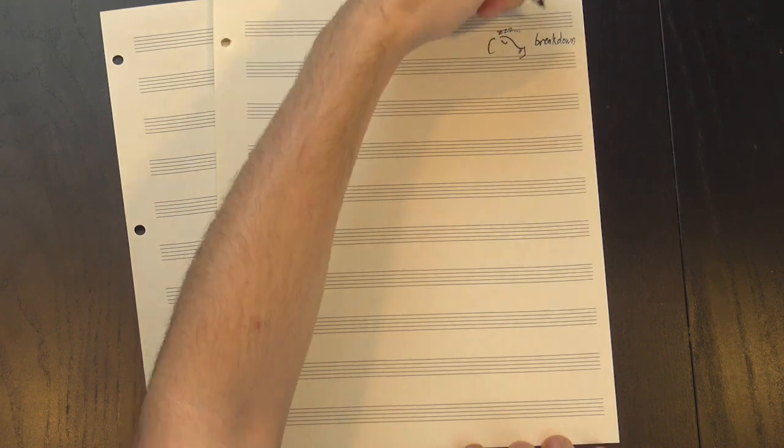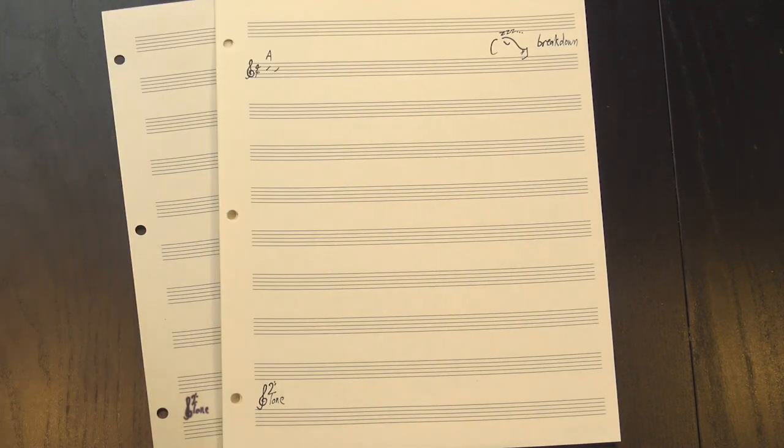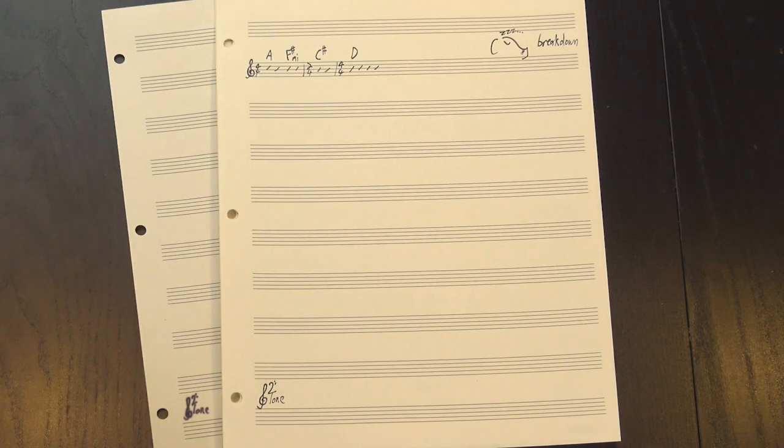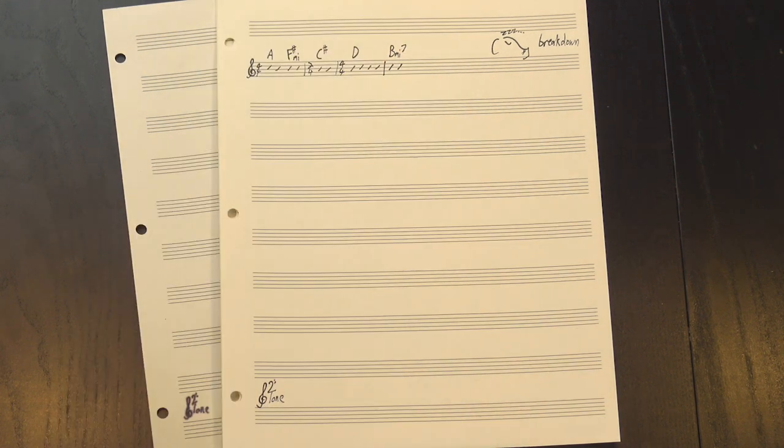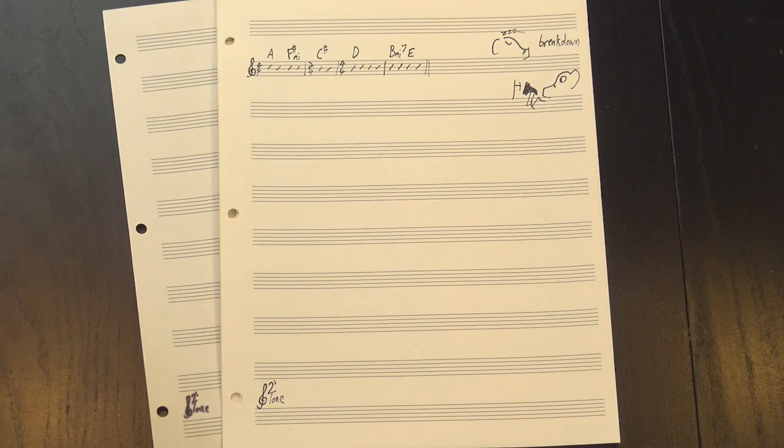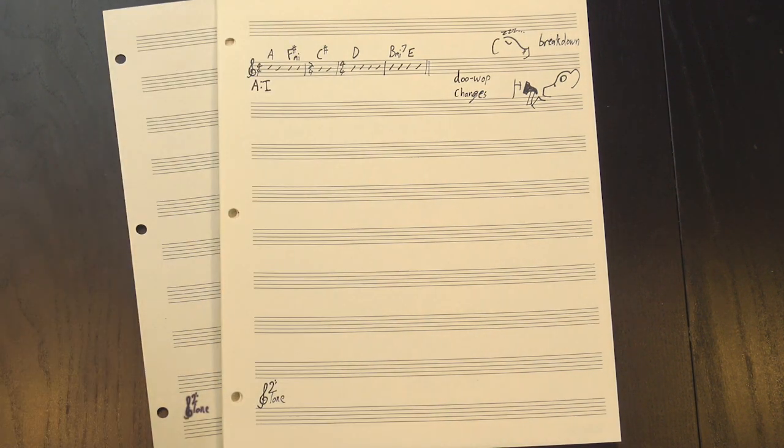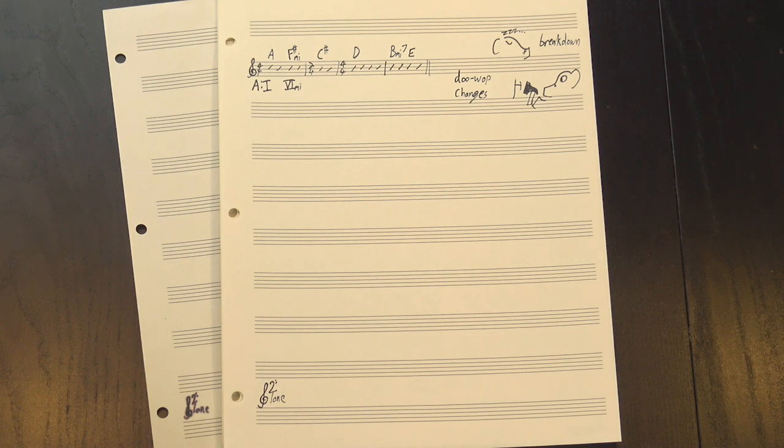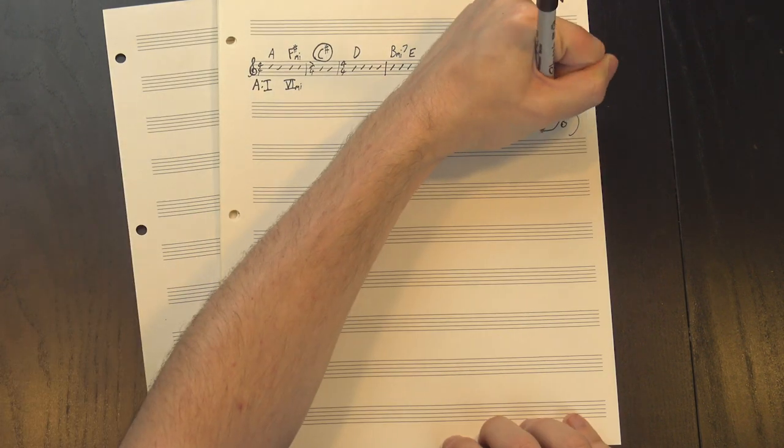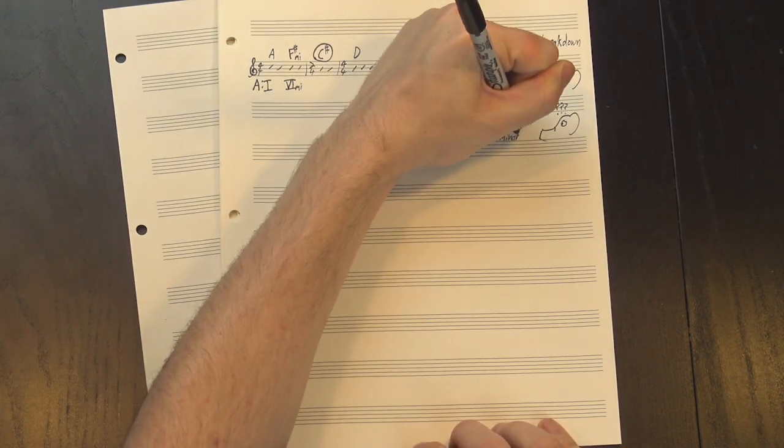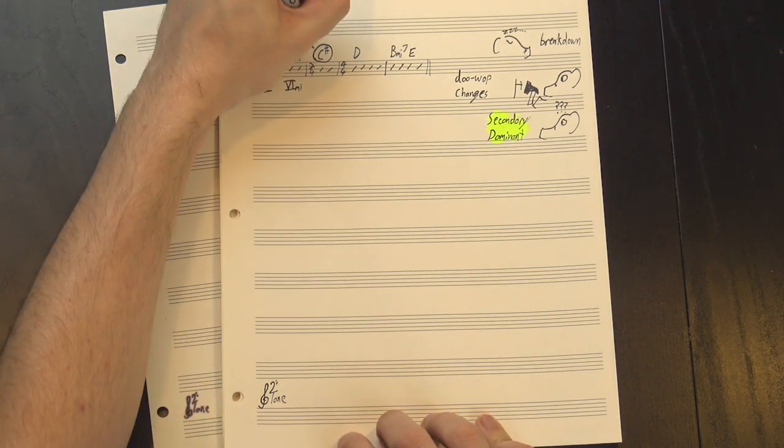the breakdown, a much quieter section that sounds something like this. And the harmony is, again, pretty functional. In fact, it looks a lot like the doo-wop changes from earlier. We start on the I chord, then go to VI minor, before transitioning to C-sharp major. This is a little tricky to explain, but I think it's best viewed as a secondary dominant that wants to resolve back to F-sharp minor. Instead,